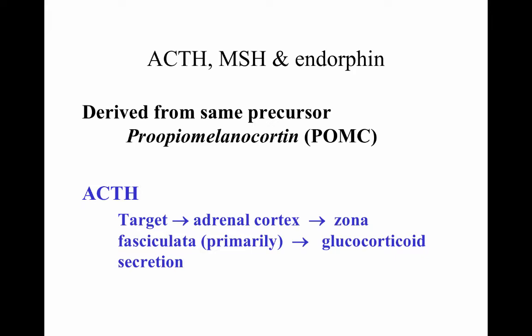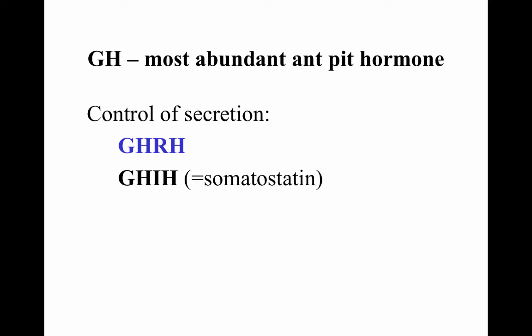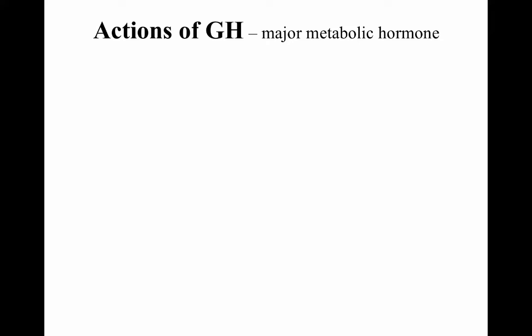ACTH targets the adrenal cortex, specifically a portion called zona fasciculata that releases glucocorticoid secretions. Glucocorticoids are important hormones that help release more glucose during times of fight-or-flight need. Growth hormone is the most abundant anterior pituitary hormone. Its secretion is controlled by growth hormone releasing hormone and growth hormone inhibiting hormone, also known as somatostatin — soma meaning body, statin to stay in place. Growth hormone is a major metabolic hormone and is catabolic except that it stimulates protein synthesis, which is anabolic.